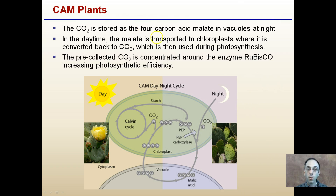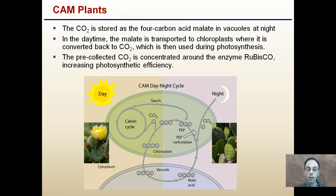In summary, carbon dioxide is stored as a four-carbon acid, malate, in vacuoles at night. During the daytime, the malate is transferred to the chloroplast where it's converted back to carbon dioxide and used for the photosynthetic process. The pre-collected carbon dioxide is concentrated around the enzyme rubisco, increasing photosynthetic efficiency. At night, carbon dioxide comes in and is stored as an acid in the vacuole; during the day, that acid is broken apart and run through the Calvin cycle to generate sugars. This occurs in plants in extremely dry and arid conditions, like cacti.